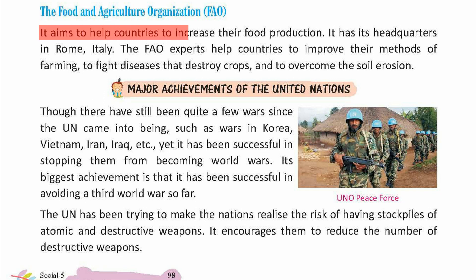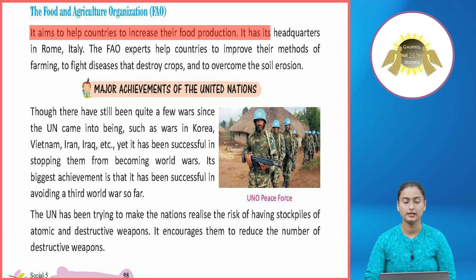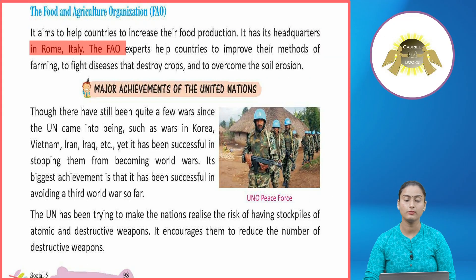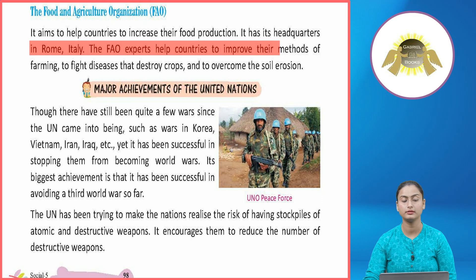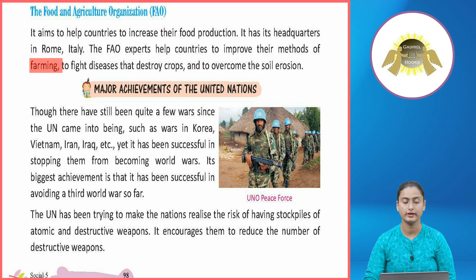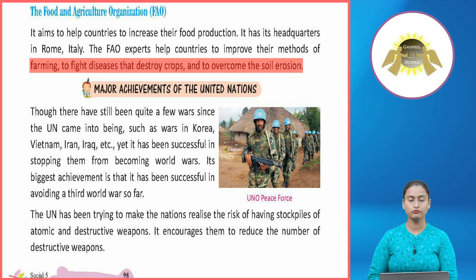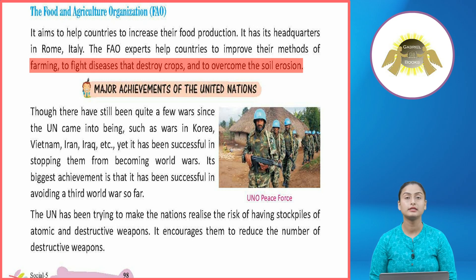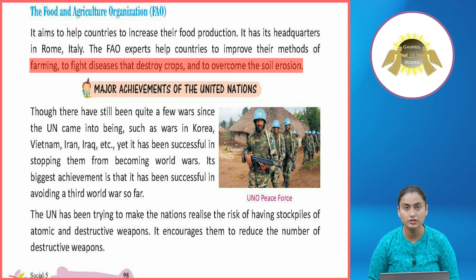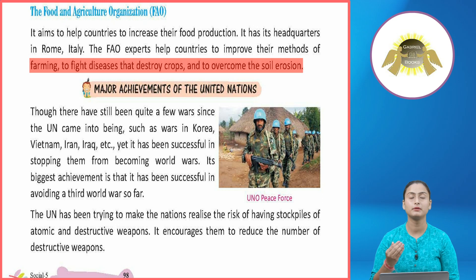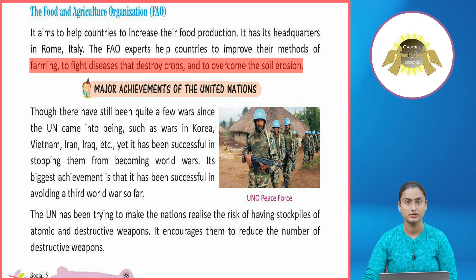The Food and Agriculture Organization (FAO) aims to help countries increase their food production. It has its headquarters in Rome, Italy. FAO experts help countries to improve their methods of farming, to fight diseases that destroy crops, and to overcome soil erosion. Food and Agriculture Organization ke headquarters Rome, Italy mein hain aur yeh alag-alag deshon ki farmers ko knowledge deti hain ki soil erosion ko kaise roka jaye aur jin bimariyon se faslein kharaab hoti hain unse kaise bachaya jaye.